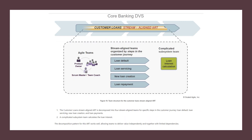The second ART is the retail loans — or customer loans — stream-aligned ART. As part of the core banking solution train, the customer loans stream-aligned ART is decomposed further into four stream-aligned teams for specific steps in the customer journey: loan default, loan servicing, new loan creation, and loan payments. According to the number of customer journeys, you can classify and categorize into medium-sized or big-sized stream-aligned teams. It is also better to have a complicated subsystem team that handles loan interest calculation.